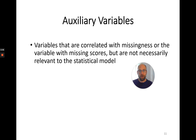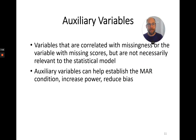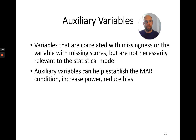These kinds of variables are called auxiliary variables. They are not typically of substantive interest in the statistical model, but they are important for better handling missing scores. Including them can help you establish the missing at random condition more closely, because those variables are correlates of missingness. They explain missingness and provide information about it, so they can help reduce bias and increase statistical power. Mplus has very convenient features for dealing with auxiliary variables so you don't have to figure out how to manually include them in your model — Mplus does it automatically behind the scenes.